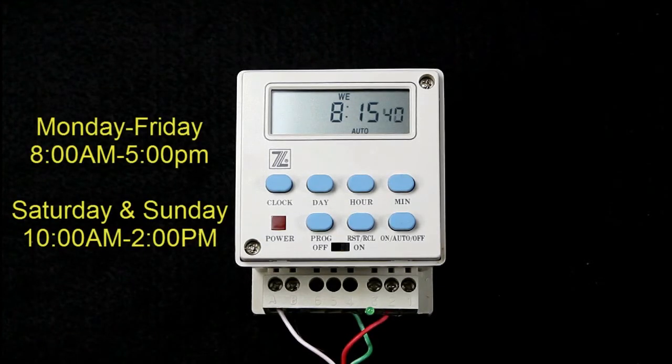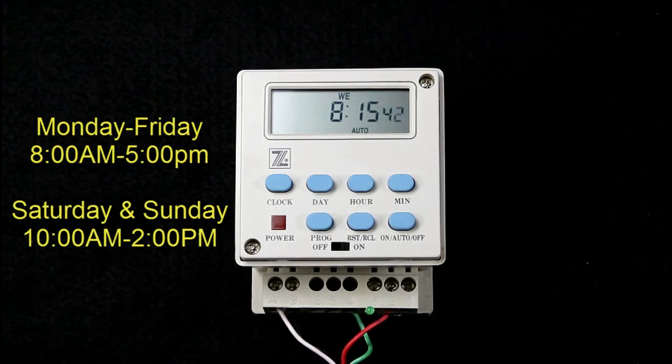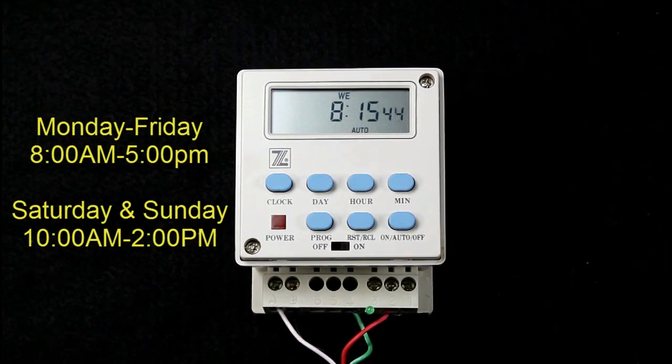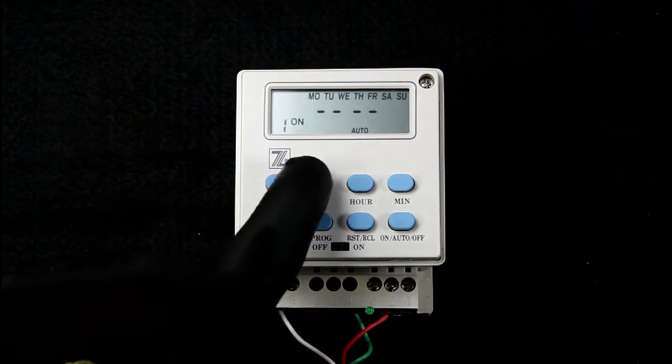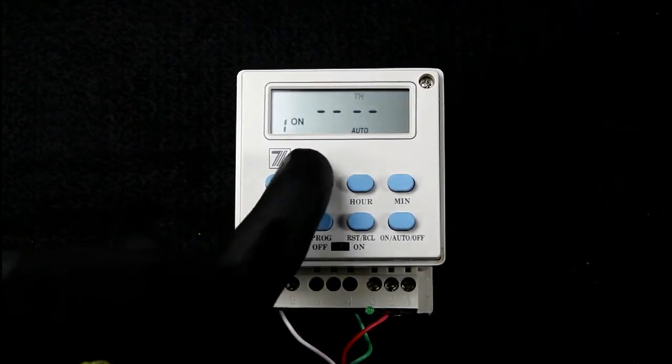Now in this example, we'll have a gate to a community that wants the gates open Monday through Friday, 8 to 5, and Saturday and Sunday, 10 to 2. Press program to begin setting up the timer.